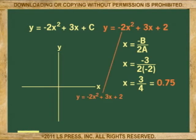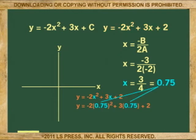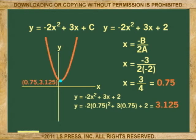Going back to the original equation, when x equals 0.75, y equals negative 2 times 0.75 squared plus 3 times 0.75 plus 2. Squaring, multiplying, and adding, the value of y is 3.125. The vertex is at 0.75, 3.125.